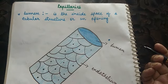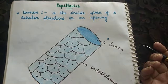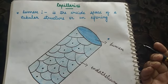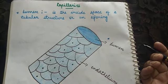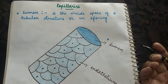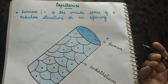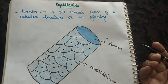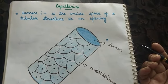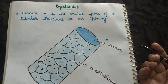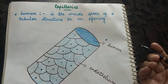Good morning students. Welcome back to your science class. In our previous video, we discussed in detail regarding the structure as well as the function of veins. And before that we also saw the structure and functions of arteries. So two blood vessels — arteries and veins — are clear to us.